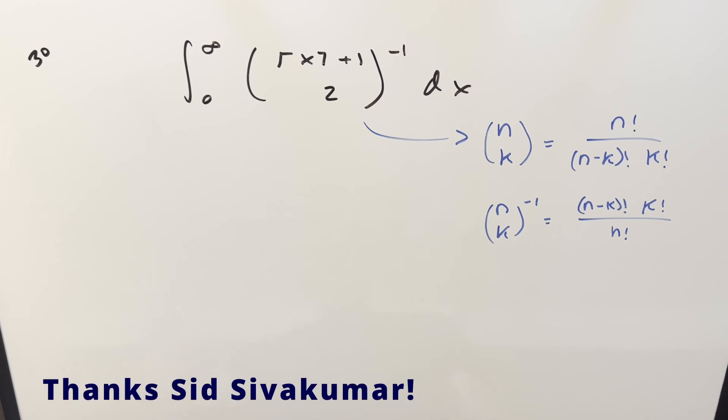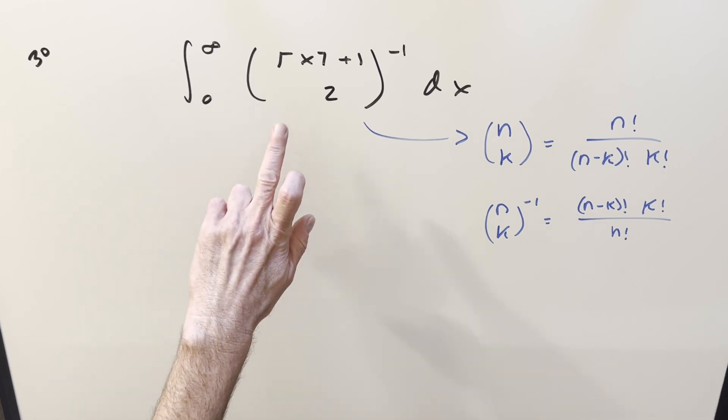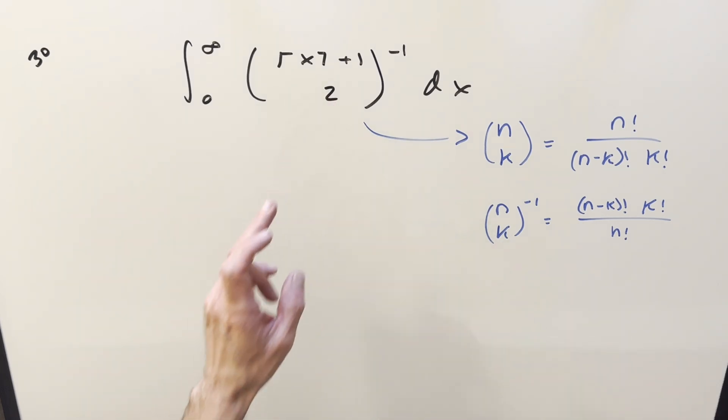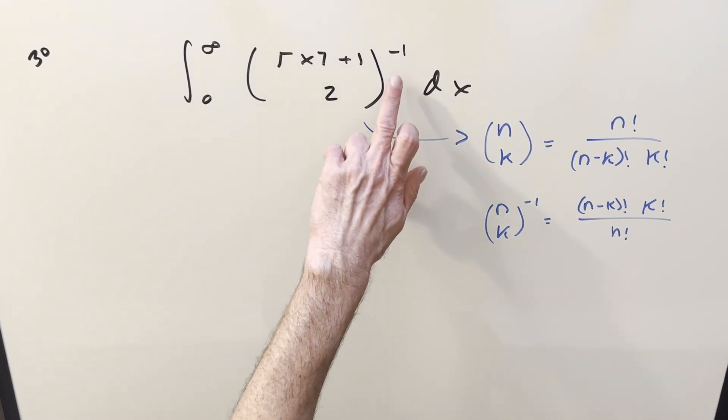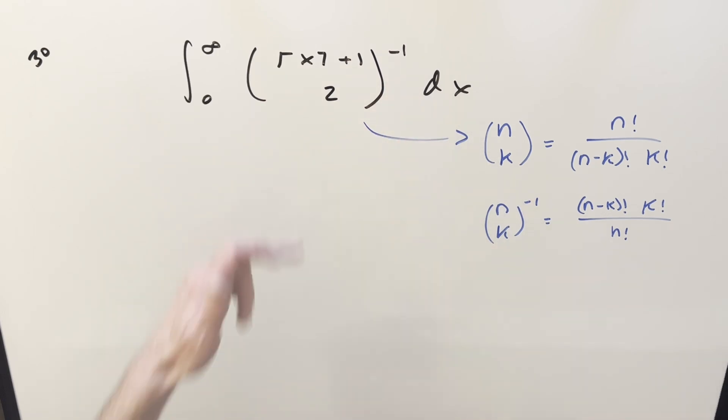Okay, we have here an interesting integral. This one was sent to me by Sid. We've got the integral from zero to infinity of the binomial coefficient of the ceiling function of x plus one over two, but we want the reciprocal dx. I think the notation is clear, but I just want to go over it just so that we're all on the same page, just because you don't see the binomial coefficient in an integral that often.